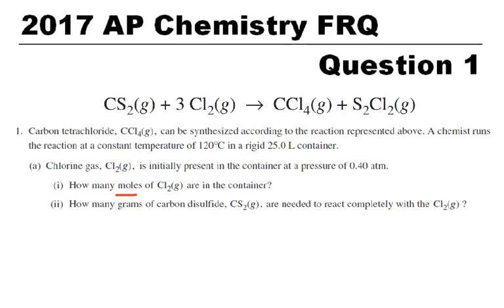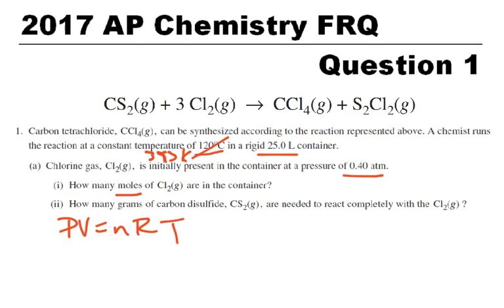When we look at this, we start seeing some things. They want moles, and we're given a pressure and a volume. Here's a temperature, and that temperature is in Celsius, so I'm going to immediately add 273 before I forget. So that's going to be 393 Kelvin. It looks like I have everything I need to do PV equals nRT, and that will allow me to solve for moles, so the number of moles is going to be PV over RT.